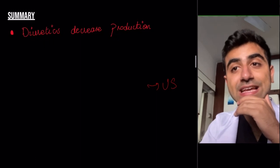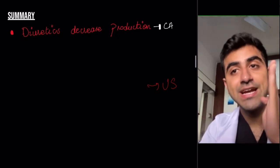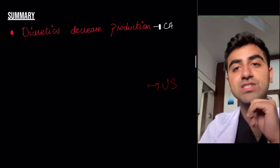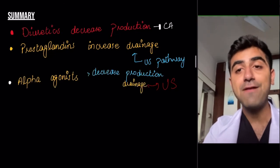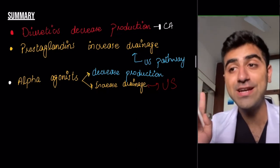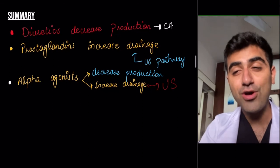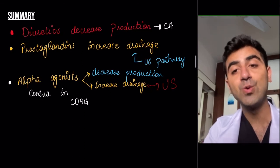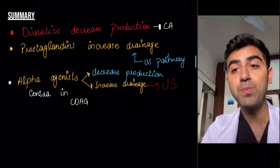Diuretics decrease production by inhibiting carbonic anhydrase — three D's to remember. Prostaglandins increase drainage through the uveoscleral pathway. Alpha agonists decrease production and increase drainage through the uveoscleral pathway. Epinephrine decreases production by direct vasoconstriction through alpha-1 receptors; brimonidine decreases production by acting on the ciliary pigment epithelium. Alpha agonists are contraindicated in closed-angle glaucoma because they cause mydriasis, which may cause pupillary block.